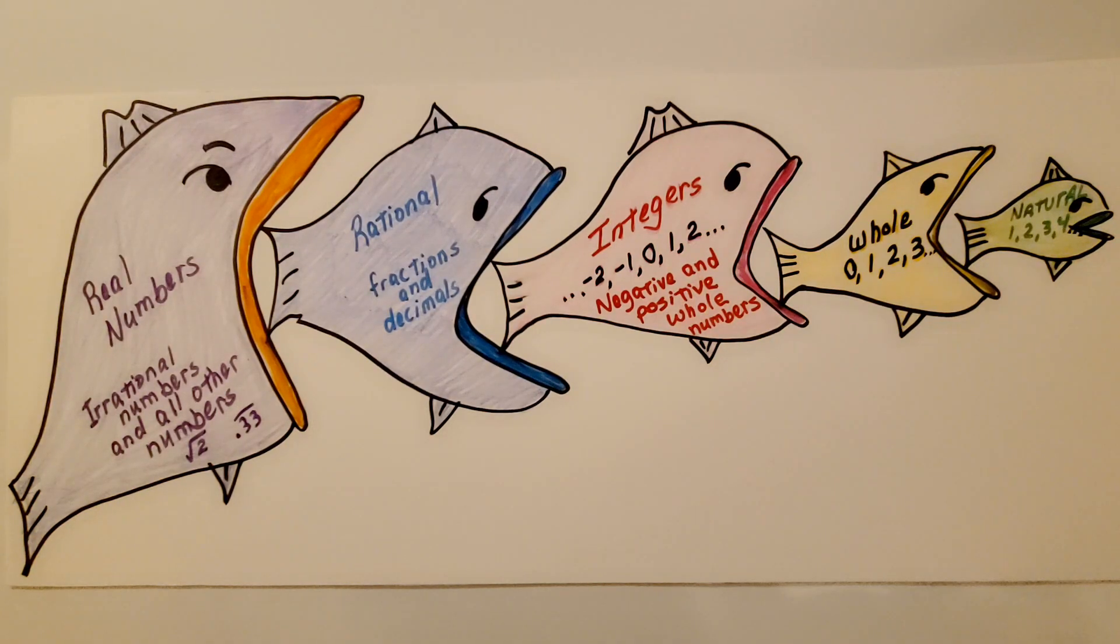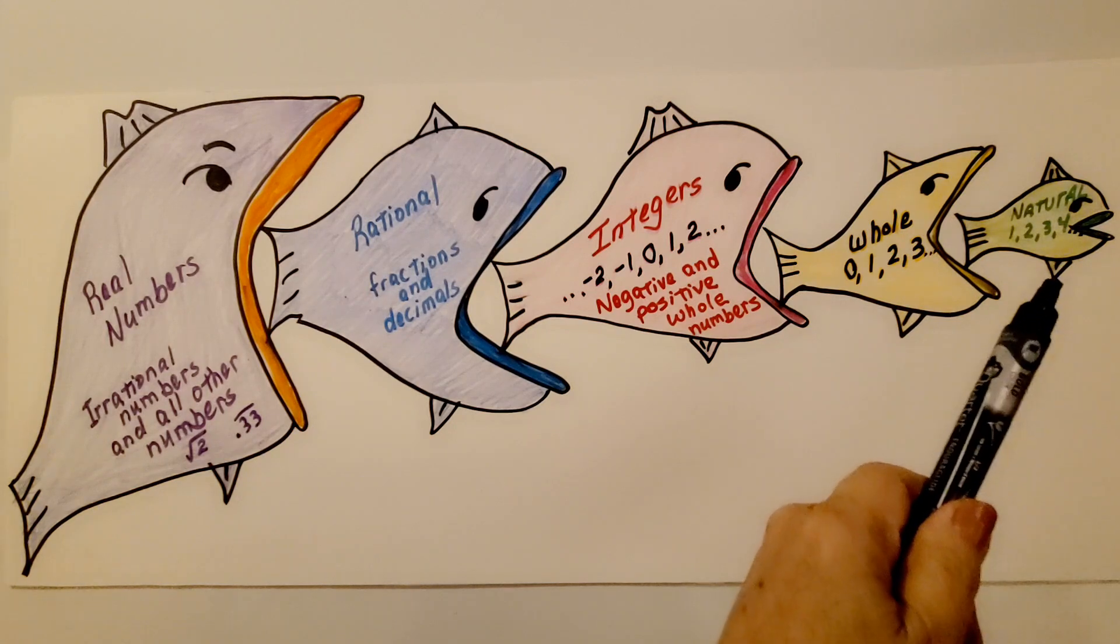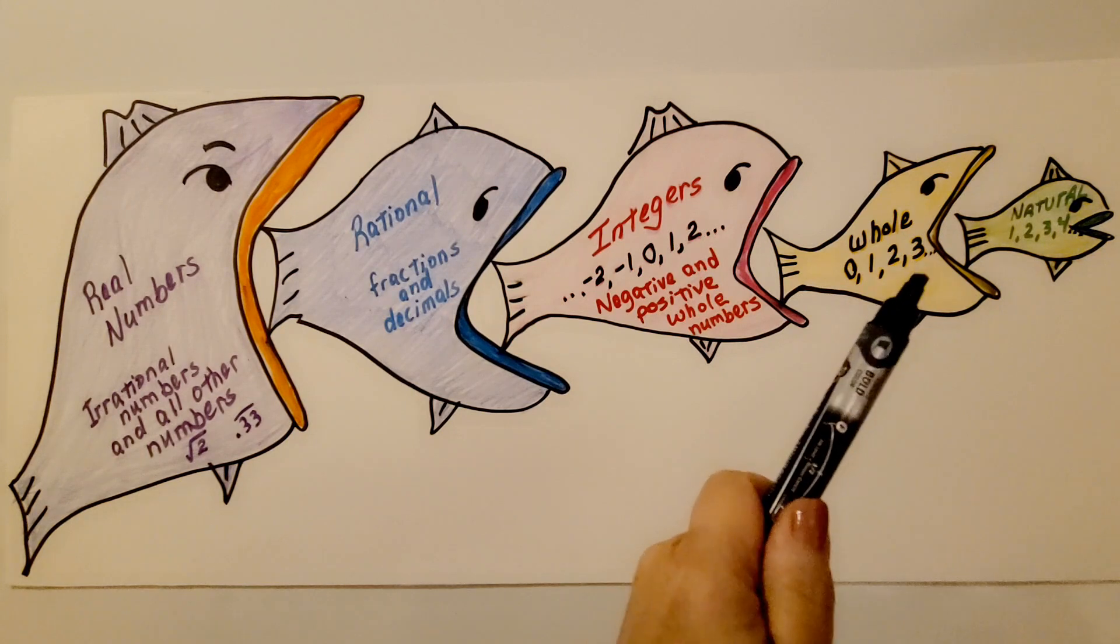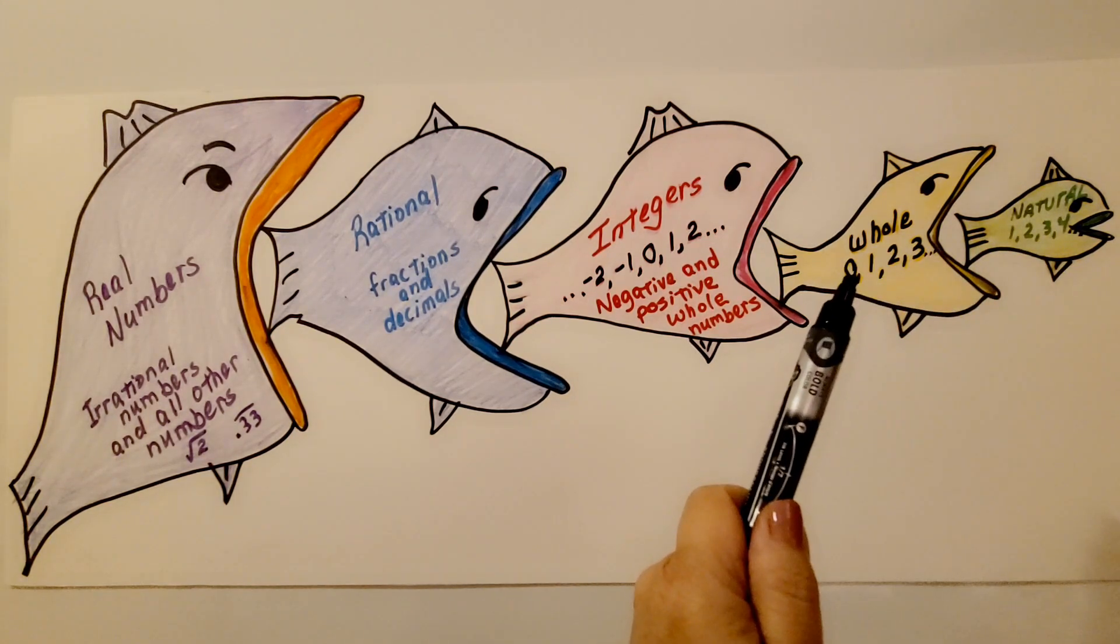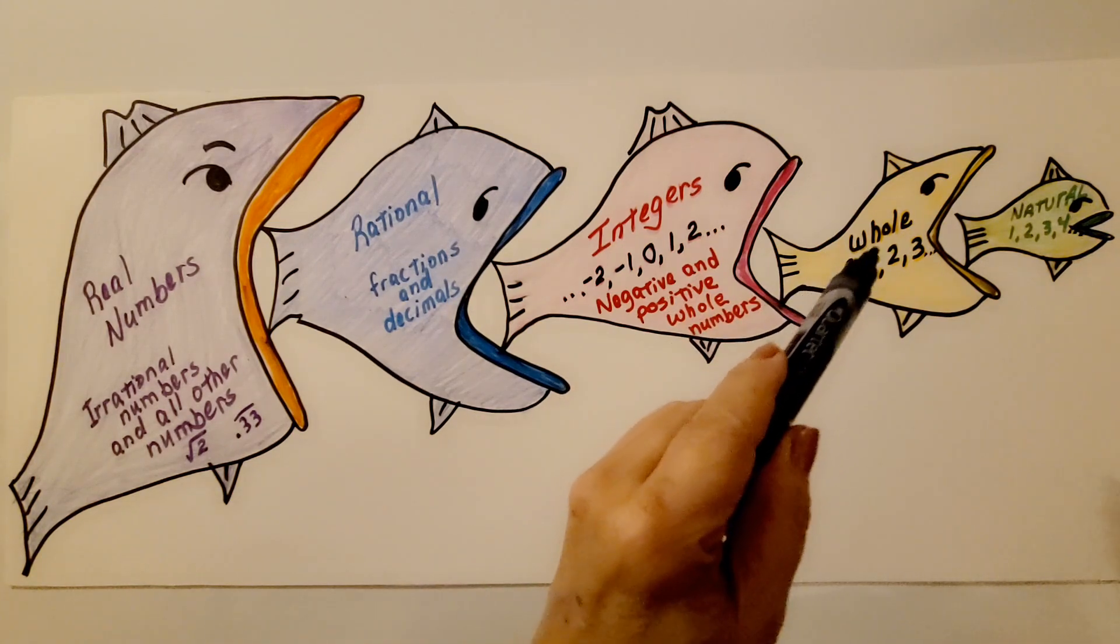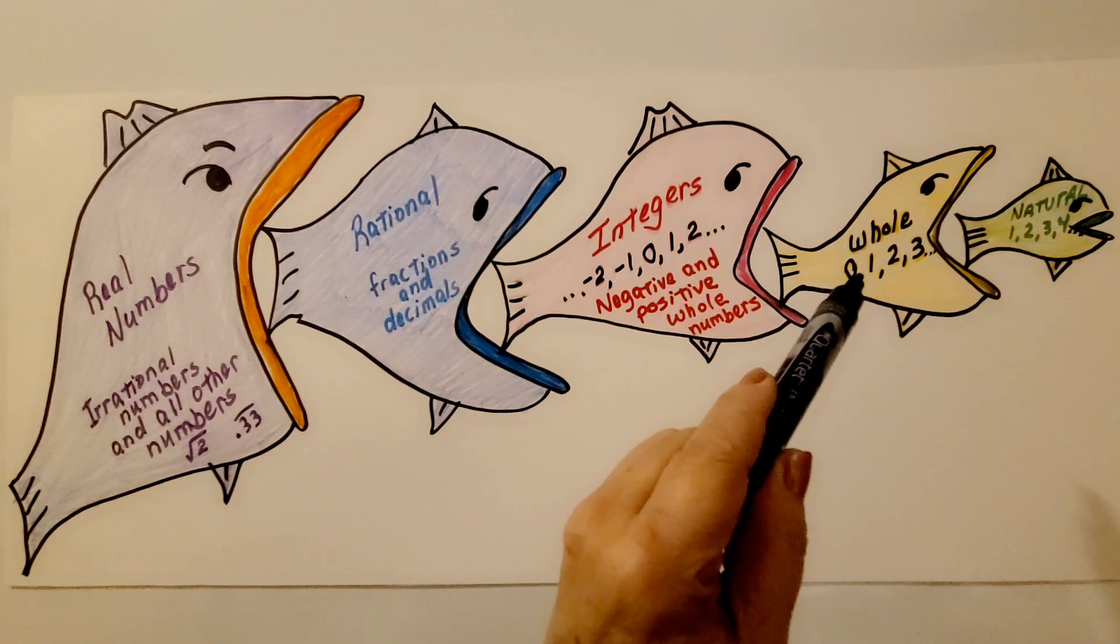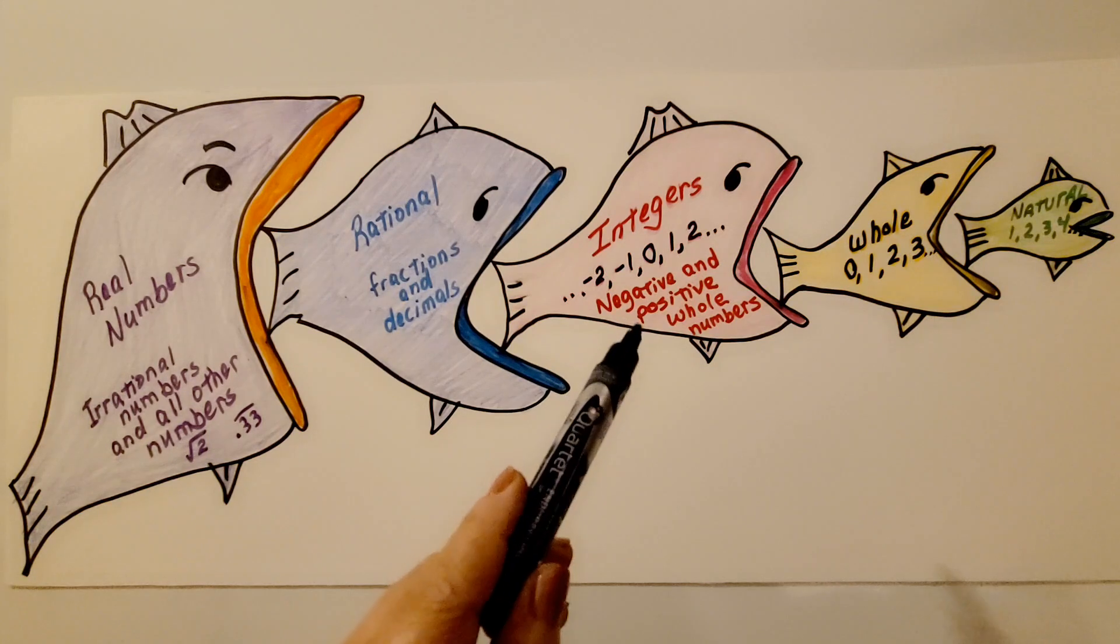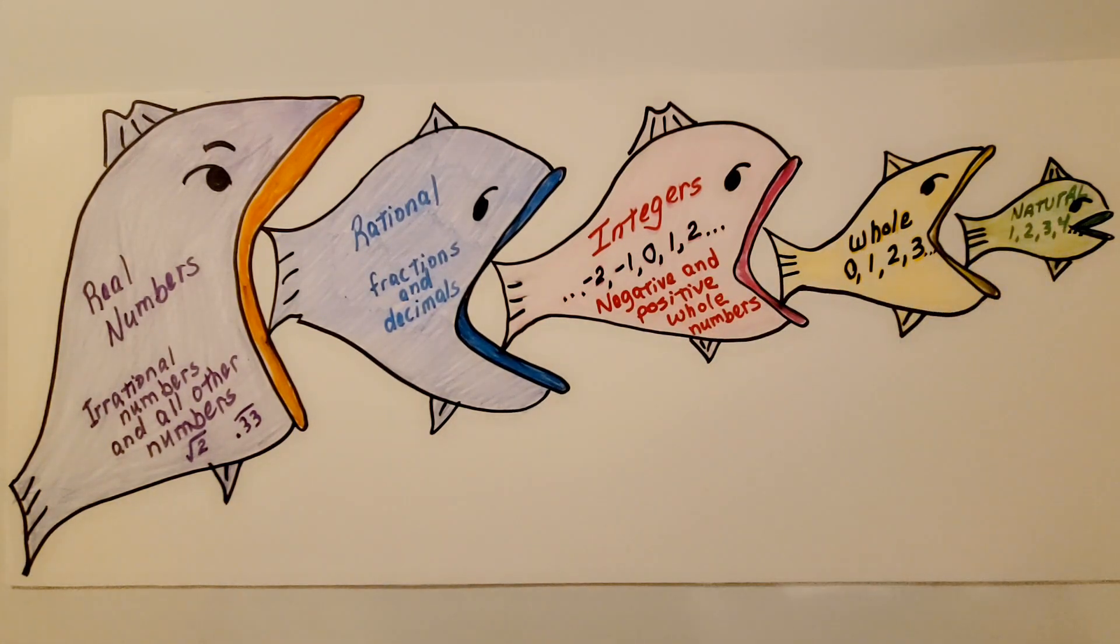This is what I meant by integers are a subset of rational numbers. We have our littlest fish here. That's the natural numbers, 1, 2, 3, 4, 5, 6, and so on. Whole numbers include the natural numbers and the number 0. And you can remember whole numbers include 0 because there's like an O and it looks like a 0, whole numbers. Integers, which are a subset of rational numbers, are the negative and positive whole numbers. And they include whole numbers and natural numbers.